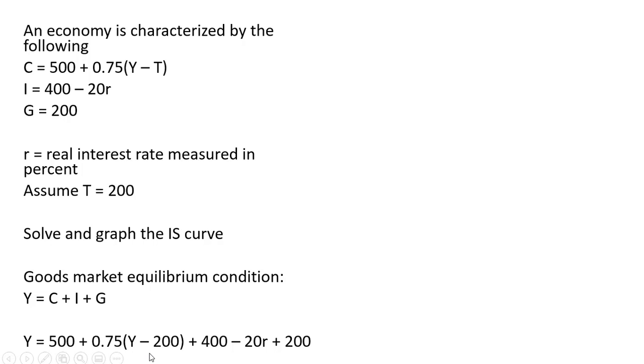Doing that, we have Y = 500 + 0.75(Y − 200) + 400 − 20r + 200. Now we're just going to simplify it. This 0.75 multiplied by Y minus 200 gives us Y = 950 + 0.75Y − 20r.